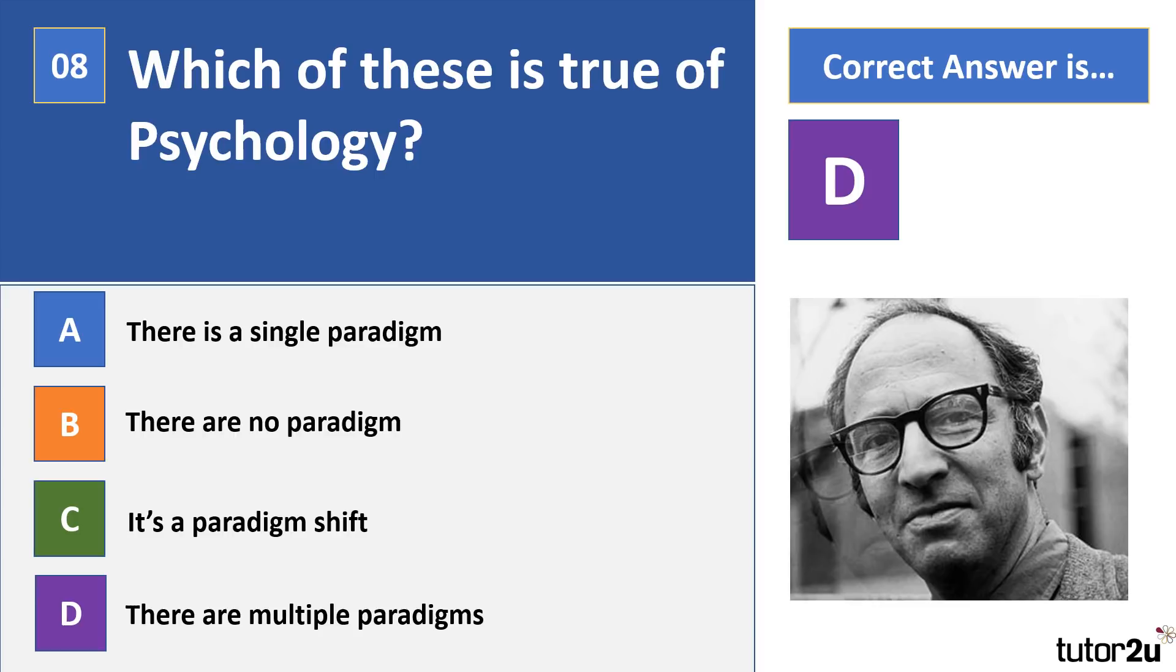A paradigm is basically a set of shared assumptions within a particular discipline, so a shared way of thinking if you like. Now Kuhn actually said that psychology would be what we call a pre-science. This is because there's basically too much disagreement. There's not a single paradigm, a single shared set of assumptions. And the reason for this, if you think about it, is because we have so many different approaches and all of the approaches can explain human behavior in different ways. So there's no shared way of thinking.